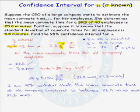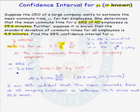The important elements of this problem are: first, make sure you define the population mean you're interested in estimating; second, check the conditions necessary to construct the confidence interval; and third, finish the problem with an English statement.